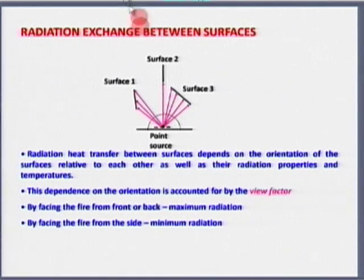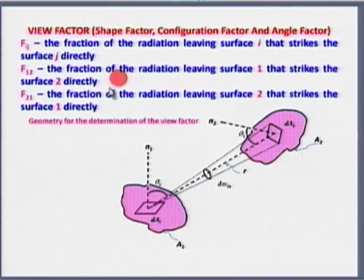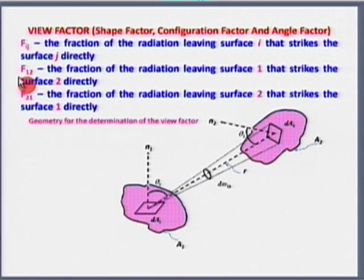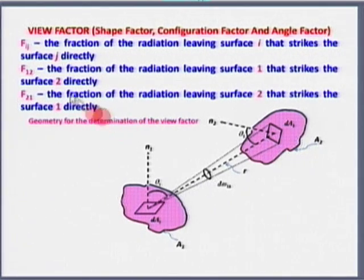The view factor, shape factor, or geometry factor is given by F_ij, where subscript i is the sending surface and j is the receiving surface. It is defined as the fraction of radiation leaving surface i that is intercepted directly by surface j. F_1→2 refers from surface 1 to 2; F_2→1 refers from surface 2 to surface 1.